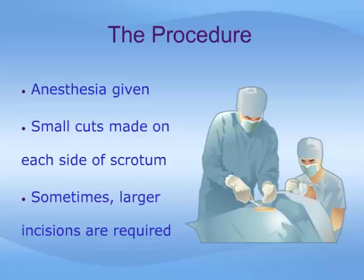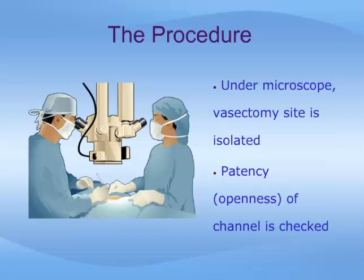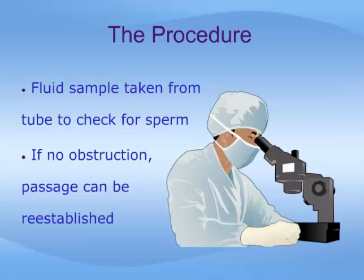Once you are under the anesthesia, your urologist will make small cuts or incisions on each side of your scrotum. Occasionally, larger incisions are required, extending up toward your groin or down lower, to either free up the vas more or to bring the testicle right out into the operating field. A surgical operating microscope is then used to isolate the vasectomy site, and each end is opened up and probed with a small instrument or fluid. Patency, or openness of the channel, is confirmed in this way, and further confirmed by taking a sample of fluid from the tube and checking for sperm under another microscope.